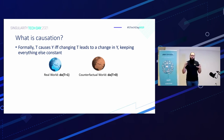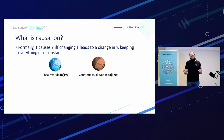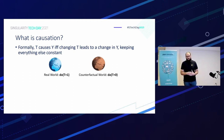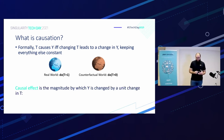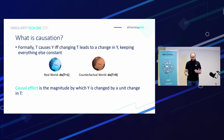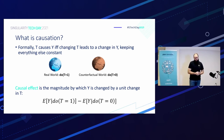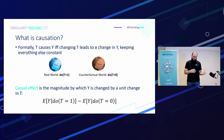More formally, causation is defined as: the treatment causes an outcome if and only if changing that treatment leads to a change in the outcome, with all else held constant. We need the real world where we change the treatment, but we also need to estimate the counterfactual world where we don't. The causal effect is the magnitude by which the outcome changes by one unit of the treatment.